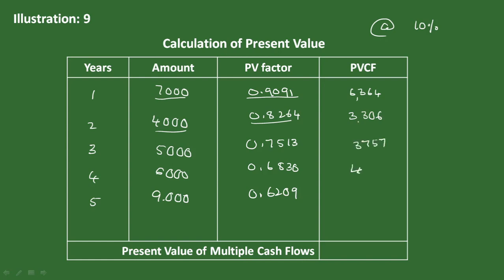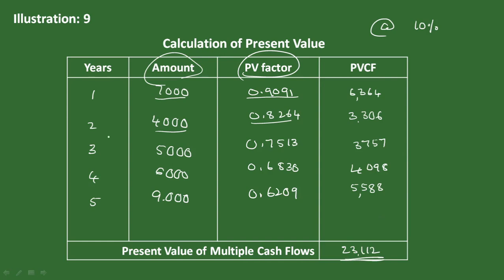So multiply each amount by the present value factor. You do the multiplication and get each amount's present value. The total gives you 23,112 rupees. So it is very simple — these are the amounts we receive and their present value.